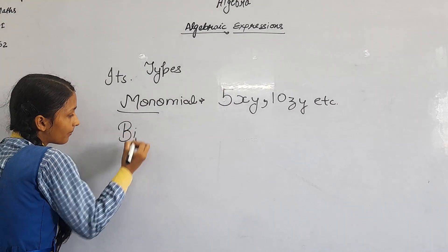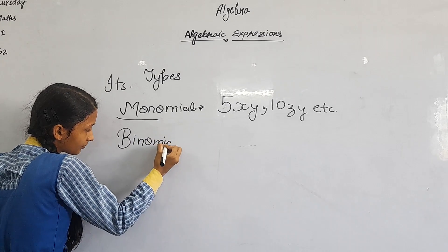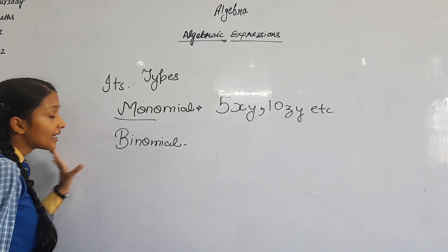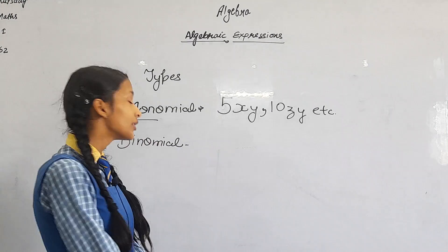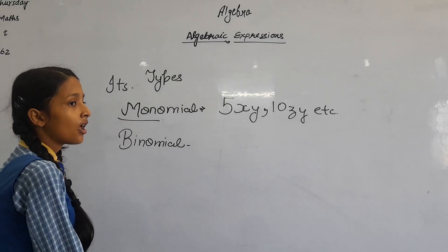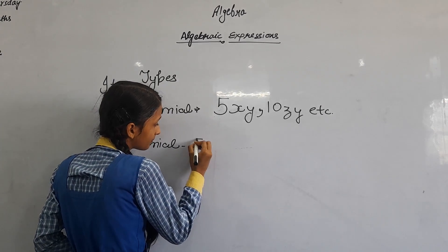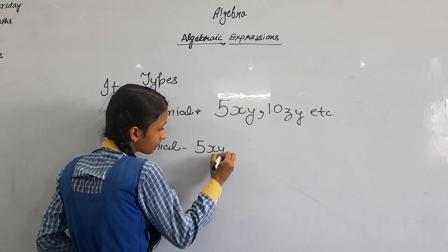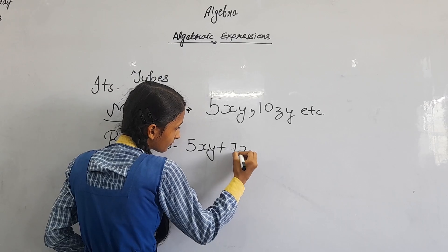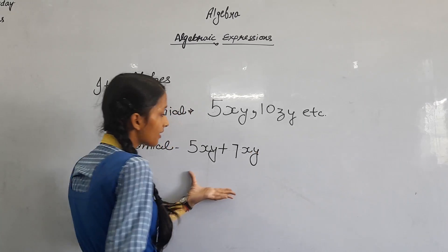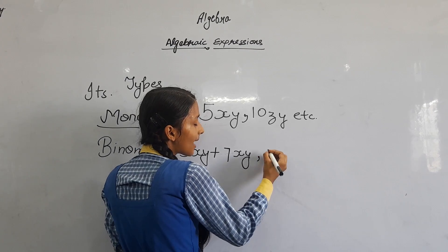Binomial — the algebraic expression which contains only two terms is known as binomial. Here we see there are two terms. Another example also shows two terms.